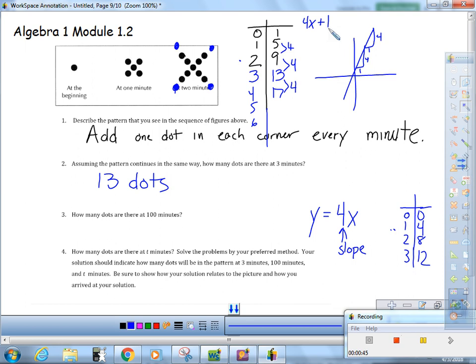So I think that after 100 minutes, since there are four dots being added every minute and we've added one because we started with one, I think there will be four hundred and one dots.